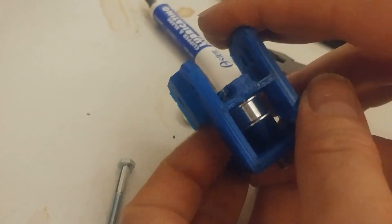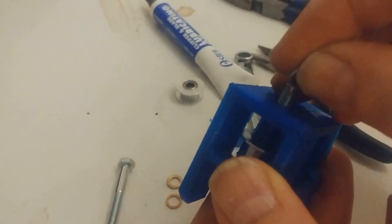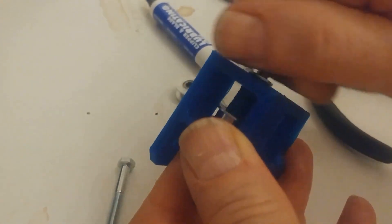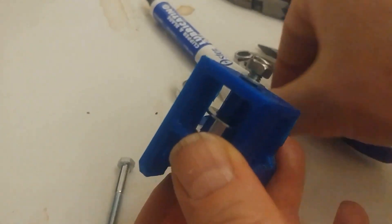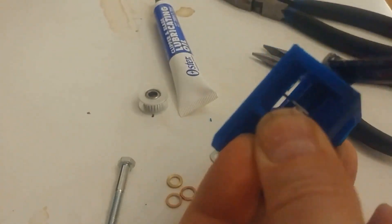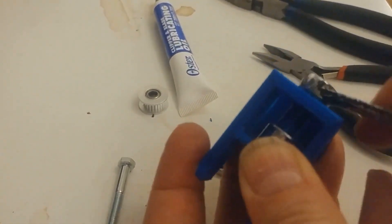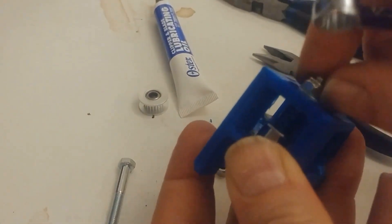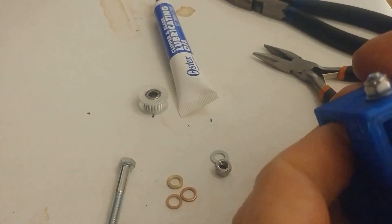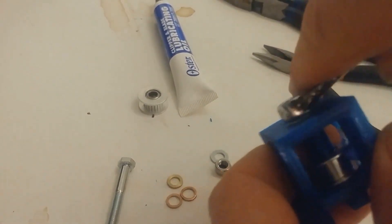Then the idler should move freely and we can add the washer and the lock nut. This nut is not supposed to be very tight. You will just break the bracket if you tighten this too much. Just apply some tension, not much. This should be good. I think that's too much actually, release a little bit again.